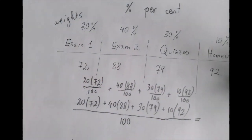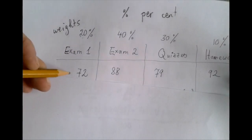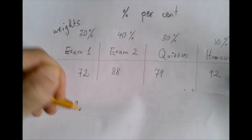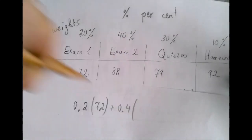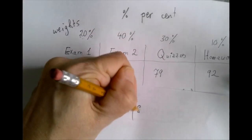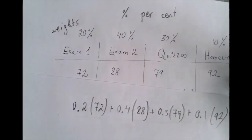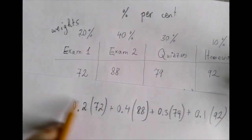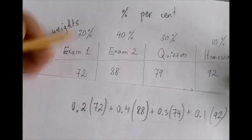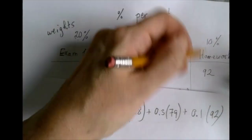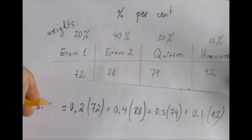We could get the correct answer by simply multiplying each percentage as a decimal by the corresponding score: 0.2×72 + 0.4×88 + 0.3×79 + 0.1×92. There is nothing to divide by — the division was absorbed into the percentages. We just multiply each pair and then add, and we'll get the same 82.5.